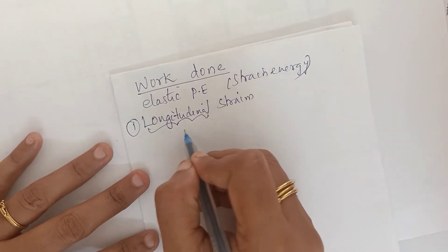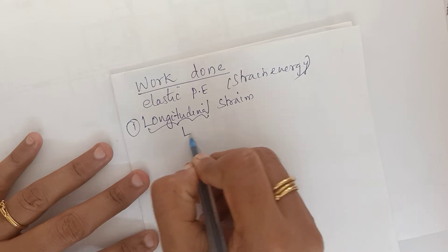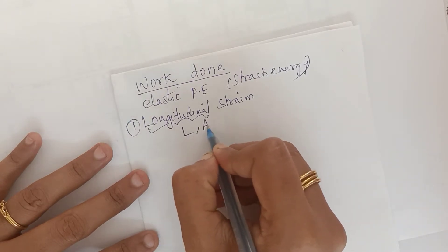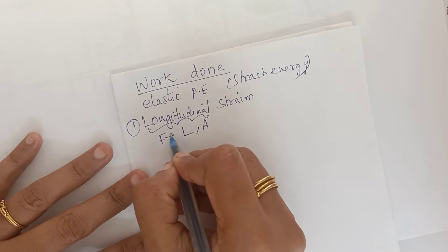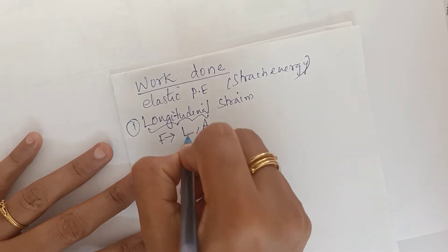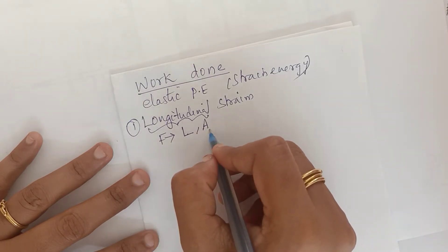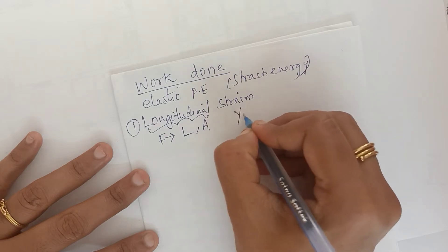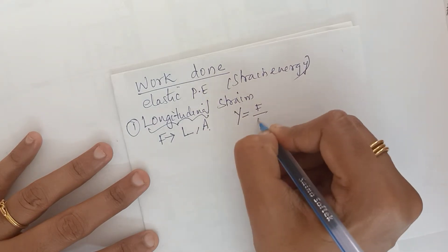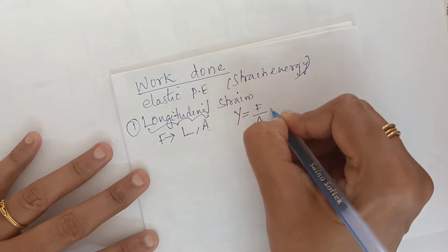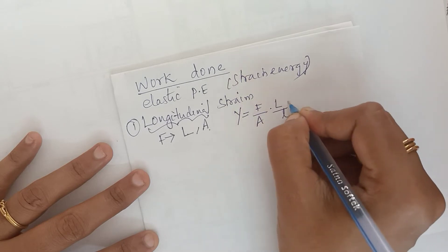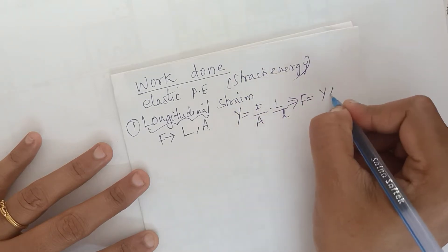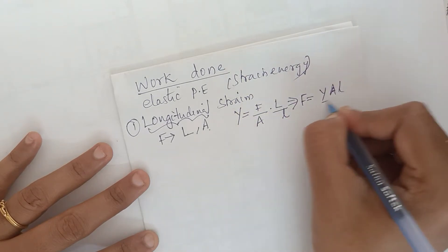Consider a wire of length L and area of cross section A, and we apply a force to this wire. In equilibrium, Young's modulus is given by Y = (F/A) × (L/ΔL), or equivalently F = Y·A·ΔL / L.